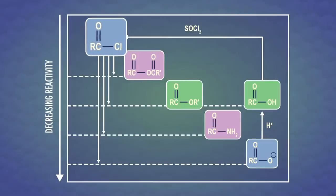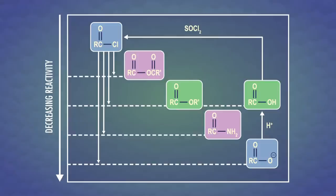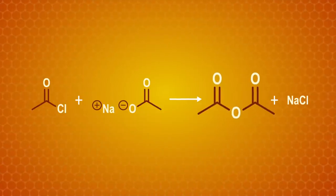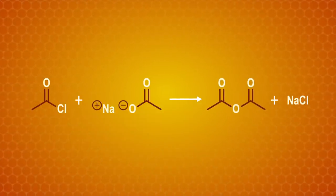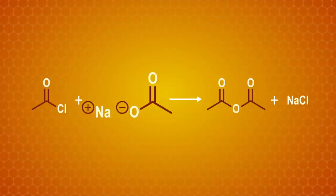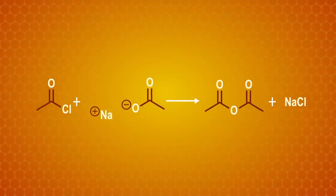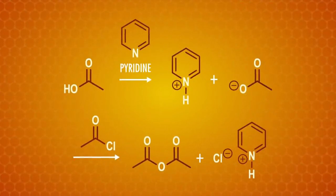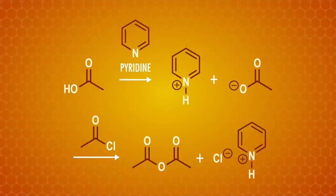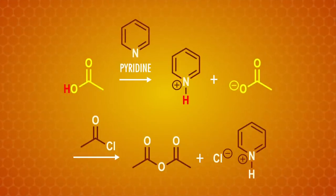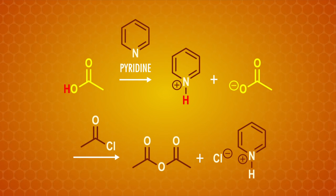As you might remember, acid chlorides are the most reactive of our barbershop quartet of carboxylic acid derivatives, so they can be converted to any of the other three derivatives. The easiest way to convert them into anhydrides, the second most reactive derivative, is to react them with a carboxylic acid salt. This reaction can also be done with a plain old carboxylic acid if you also add pyridine, a base that deprotonates the carboxylic acid and makes a carboxylate salt in our reaction flask. So you're going to need to eventually add a carboxylic acid salt to do this reaction.